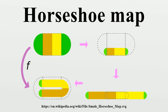Most points eventually leave the square under the action of the map. They go to the side caps where they will, under iteration, converge to a fixed point in one of the caps. The points that remain in the square under repeated iteration form a fractal set and a part of the invariant set of the map. The squishing, stretching and folding of the horseshoe map are typical of chaotic systems, but not necessary or even sufficient.